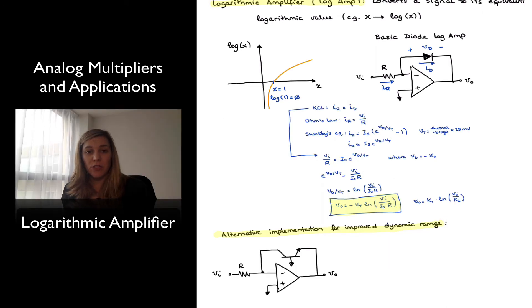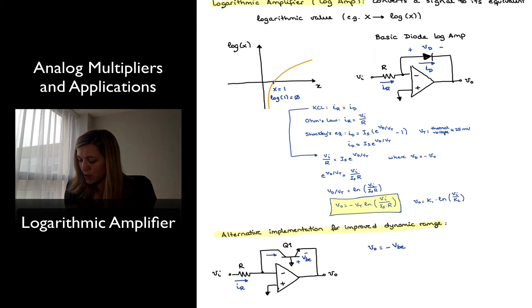An alternative implementation for this log amp would be to connect a BJT transistor in the feedback path, as shown in the figure transistor Q1. And we can see from the figure that Vout is going to be equal to negative VBE for that transistor. And basically, this circuit has the same configuration. We know that the current flowing through the resistor is going to be equal to the current flowing through that transistor, that collector current IC, just like we did before.